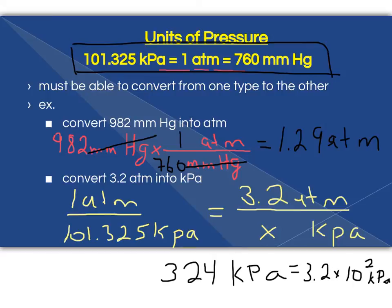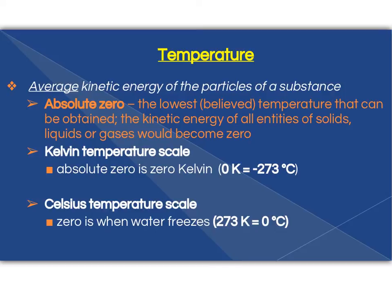And that is pressure conversions and units of pressure. Now we're going to talk about temperature. The definition of temperature is that it's the average kinetic energy of the particles of a substance. We're going to talk a bit about absolute zero.